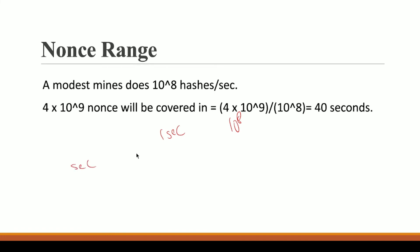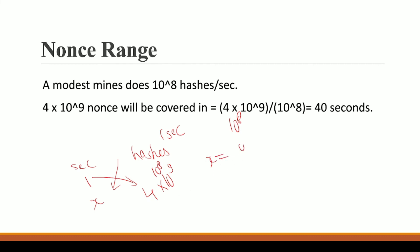Let me explain using the unitary method. In one second I can generate 10⁸ hashes. I have 4×10⁹ nonces, and since each nonce generates a hash, I have 4×10⁹ hashes to generate. Setting up the equation: x = (4×10⁹ × 1) ÷ 10⁸, which gives x = 40 seconds. So in 40 seconds I will have exhausted all my nonces. The question then is: what will I do once all my nonces are exhausted?